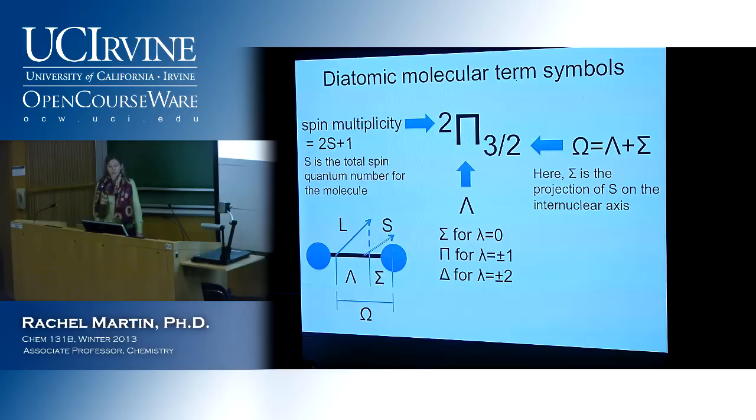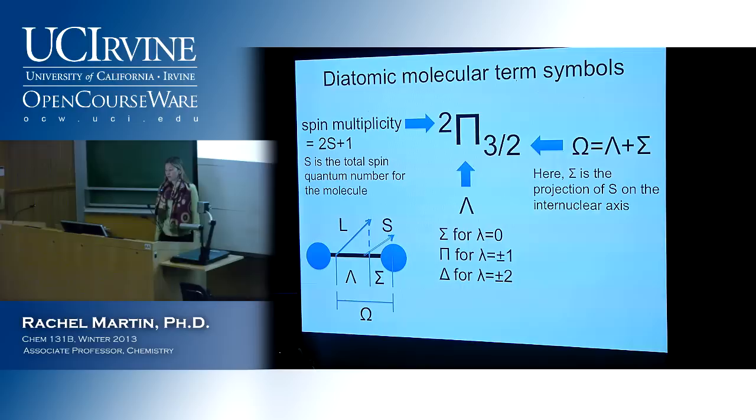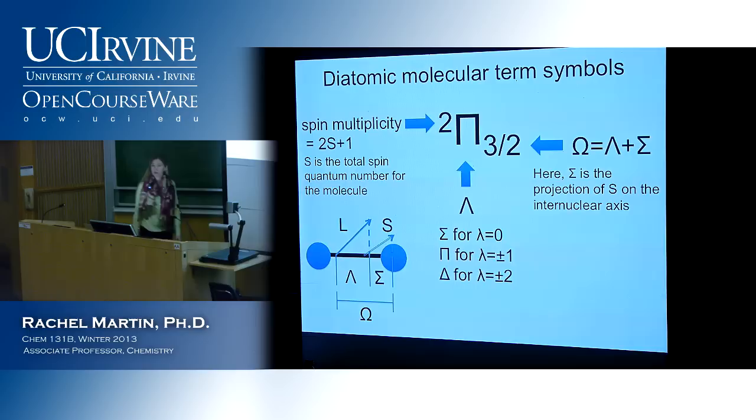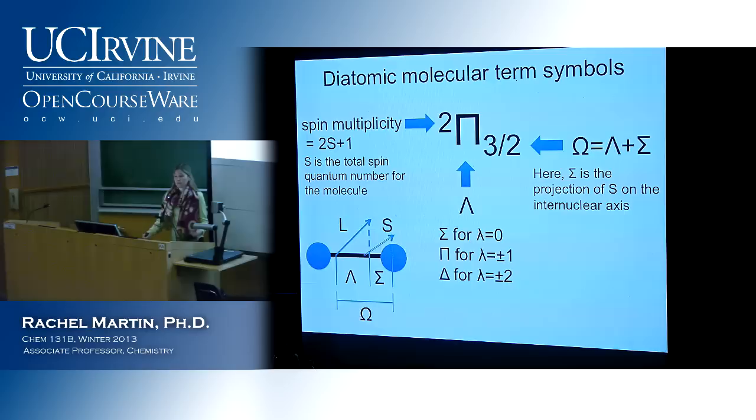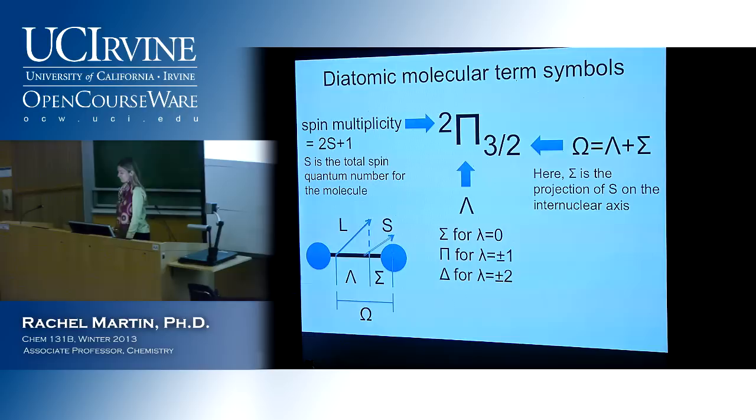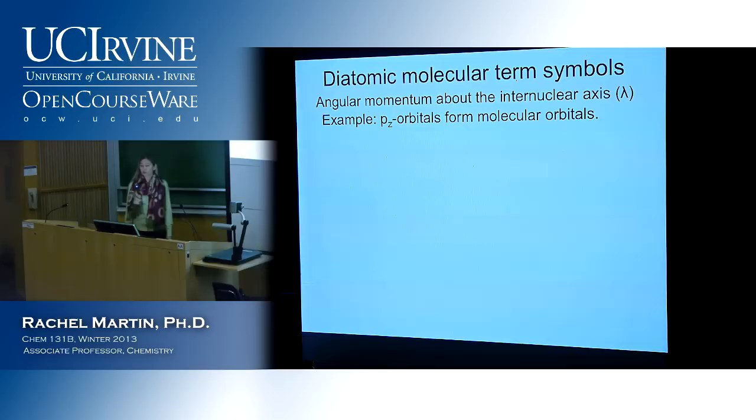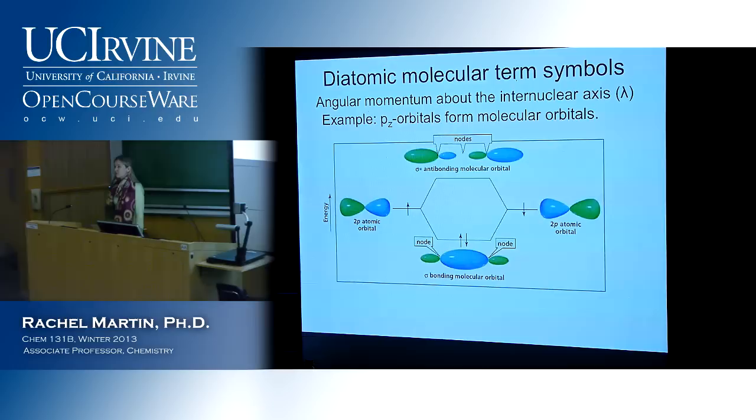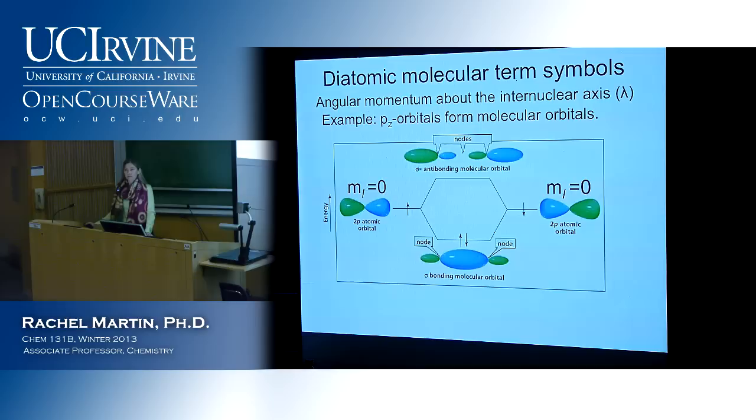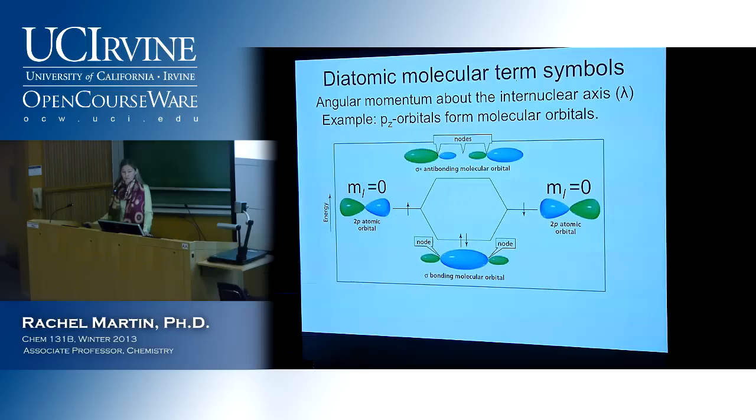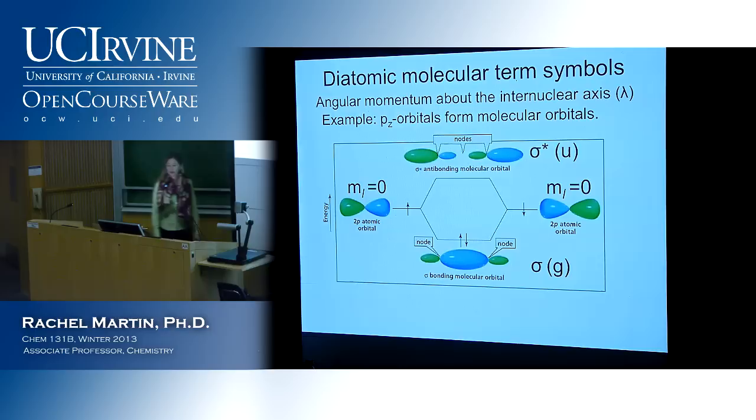And again, just terminology. In this particular thing, sigma is the projection of S on the internuclear axis. Same thing as what we were talking about in the atomic case, we had the total angular momentum and the Z component of the angular momentum. Here, we're projecting everything on the internuclear axis, but the idea is the same. So, that's where these things are coming from and what they're about. Let's look at some specific examples of how to build this up. If we have our general chemistry level molecular orbital diagram, we start with some P orbitals. And here, we're going to define Z as the internuclear axis and say this is what we get when our PZ orbitals overlap.